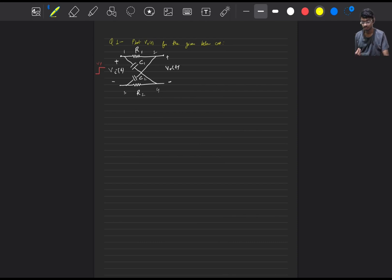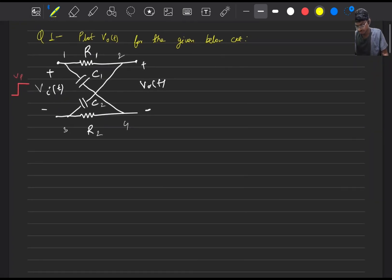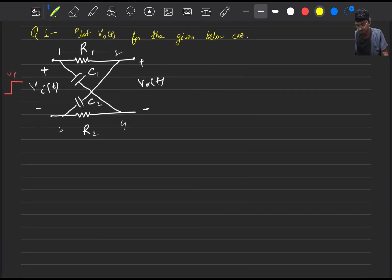Hello everyone, today we are going to solve for the given circuit below. We have to plot the output waveform for the given RC circuit. If we observe this at first glance, this will look like a second order circuit as there are two energy storing elements present.